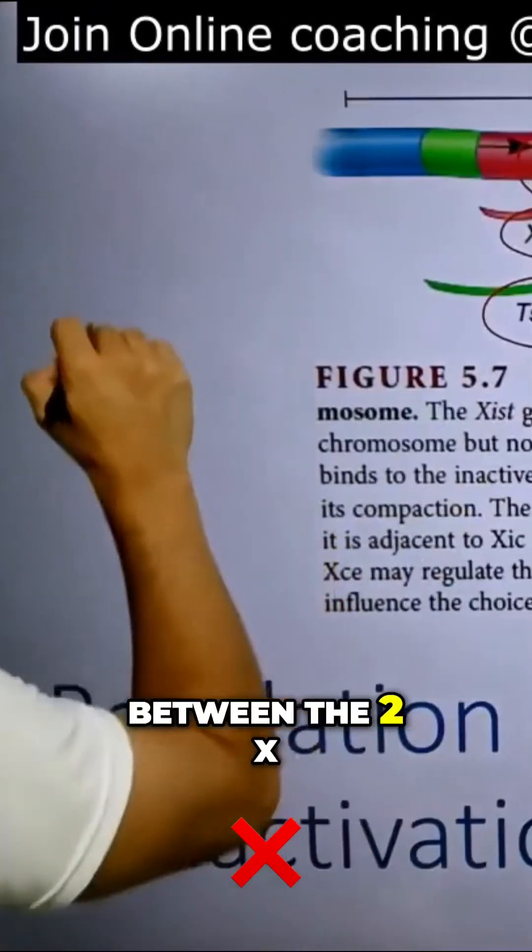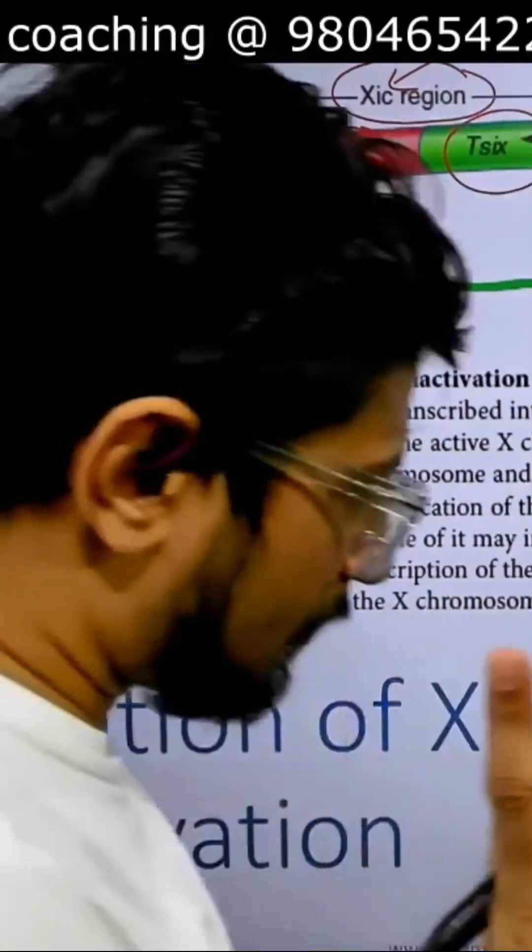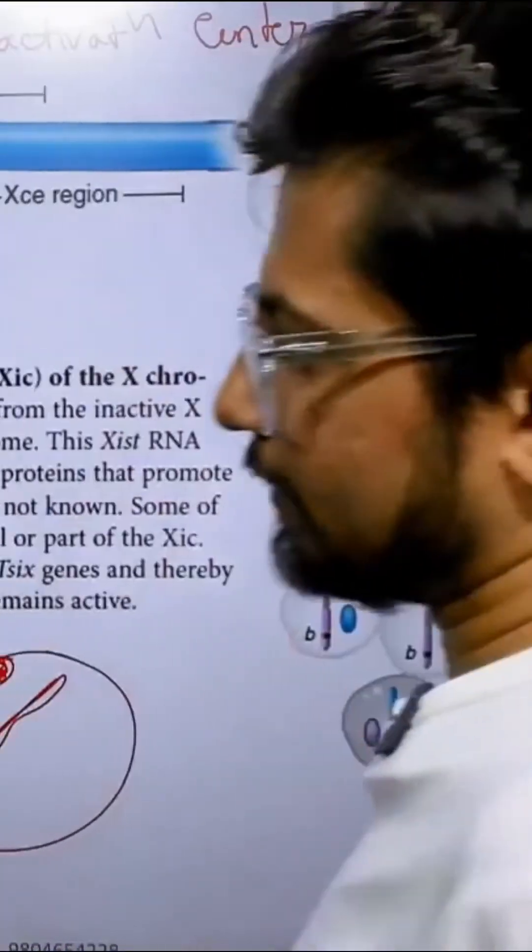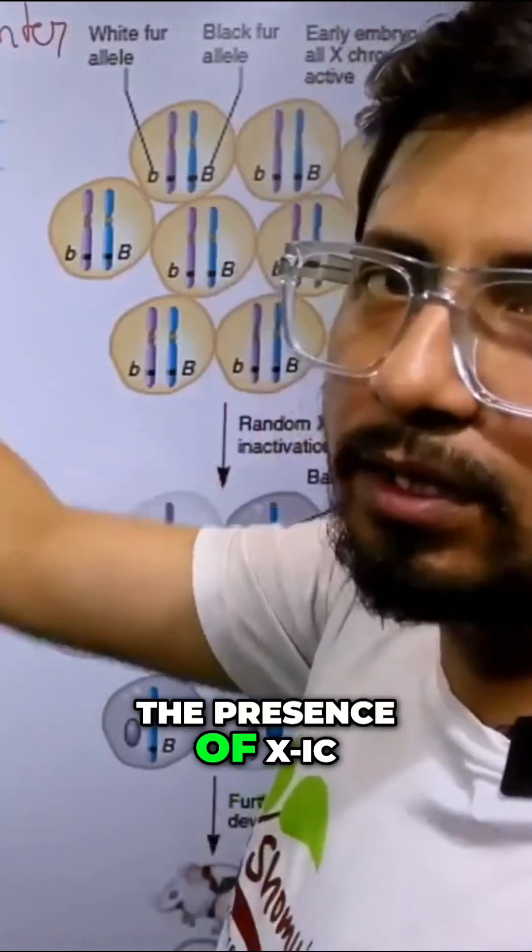So between the two X chromosomes, which one will be inactivated? It depends on the presence of X IC, the abundance of X IC.